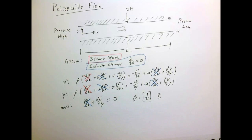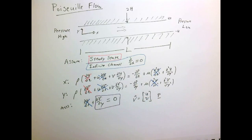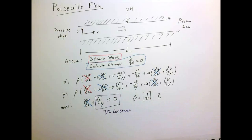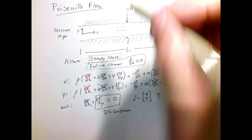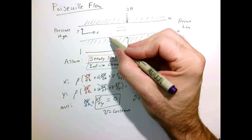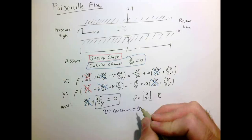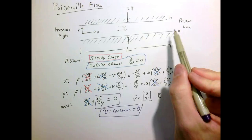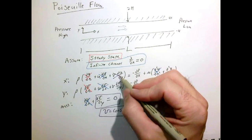We've reduced the equations somewhat. Looking at what's left, the conservation of mass equation tells us the vertical velocity v cannot change in the y direction — its derivative with respect to y is zero, so v must be a constant everywhere. Since at the wall the vertical velocity must be zero due to the no-slip condition, that constant must equal zero. There is no vertical velocity, which is consistent with an infinite channel where u doesn't change in x and we're bounded by two walls.